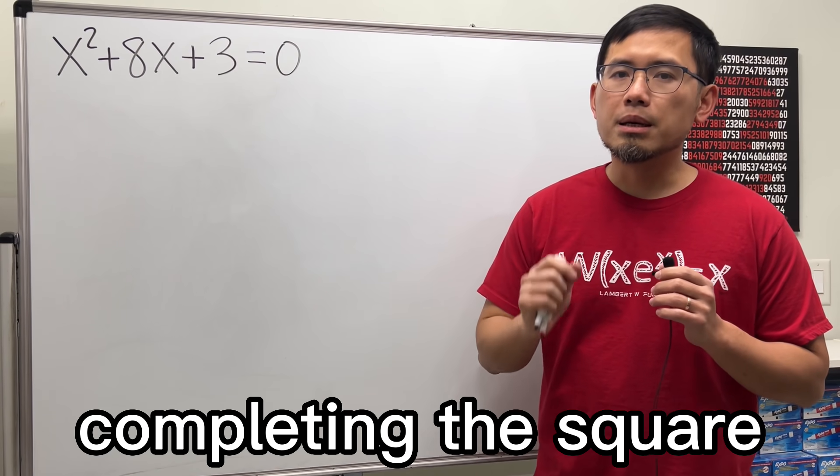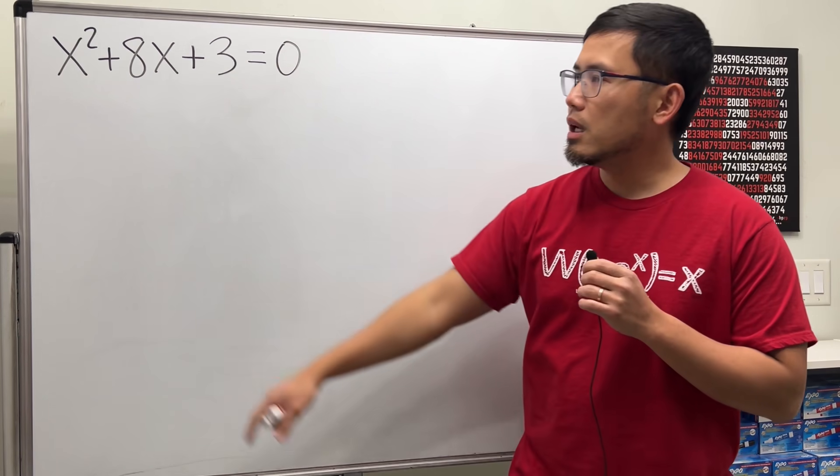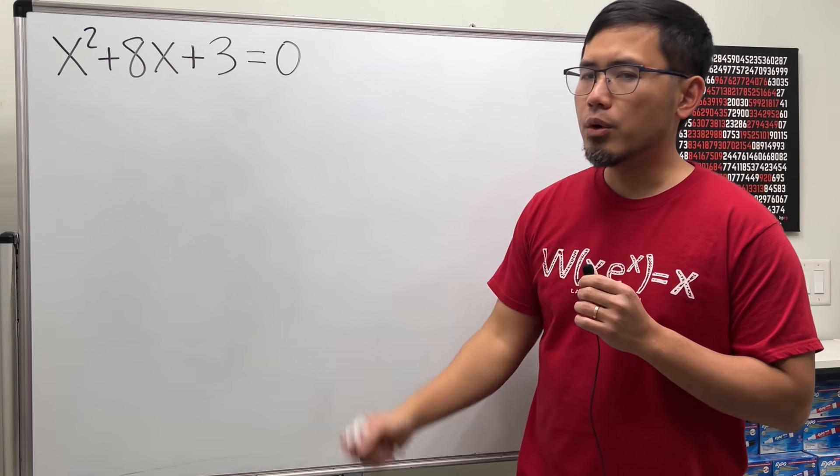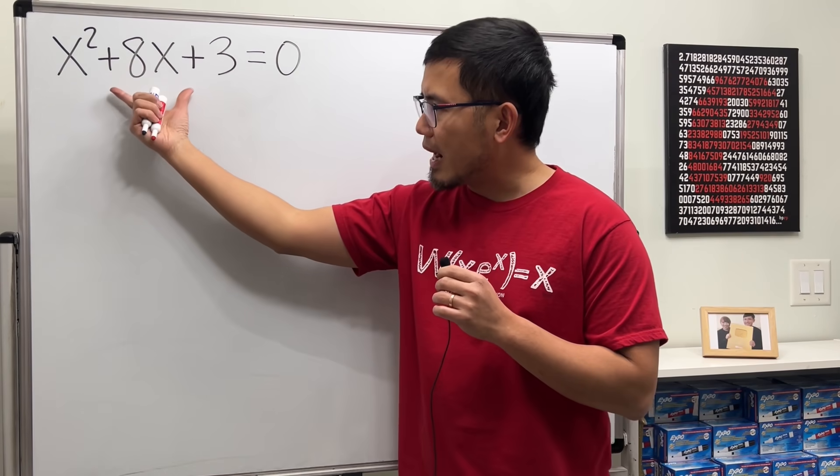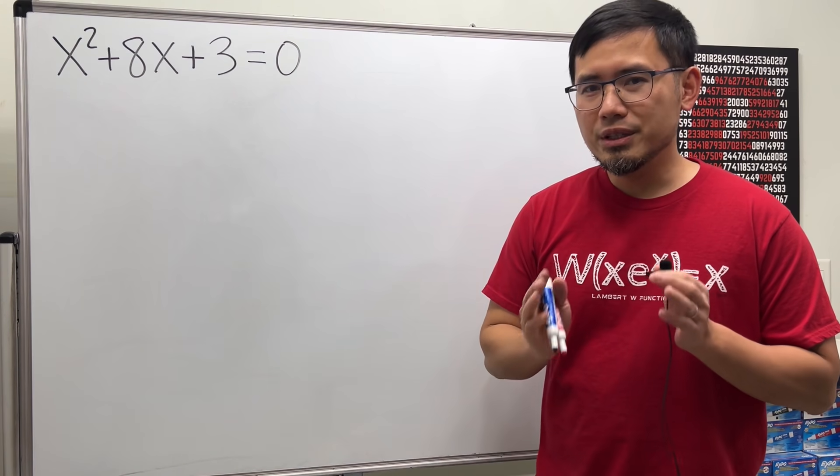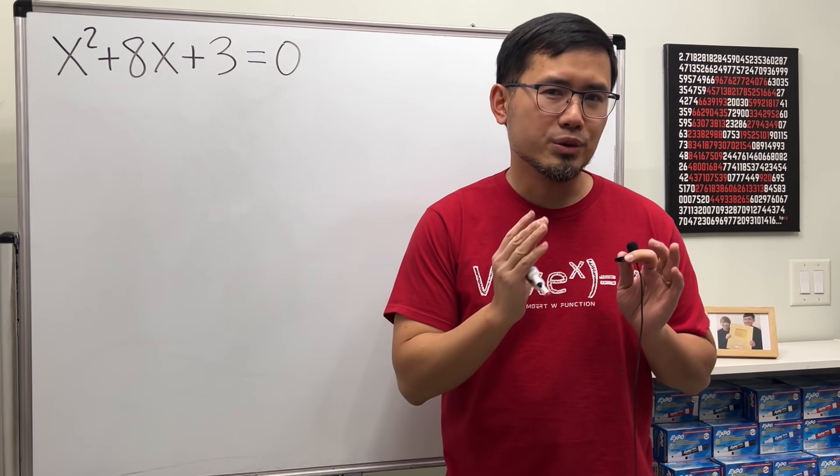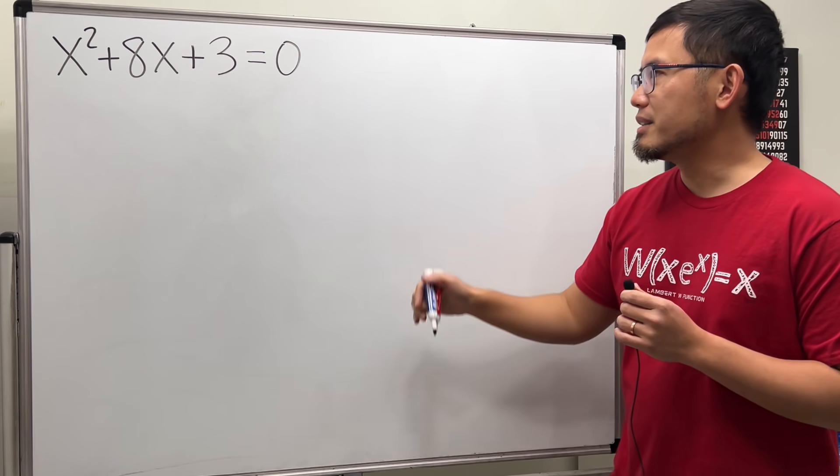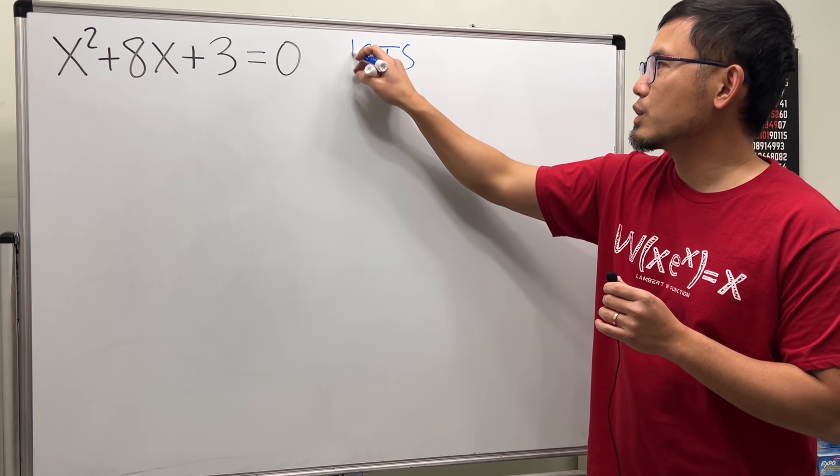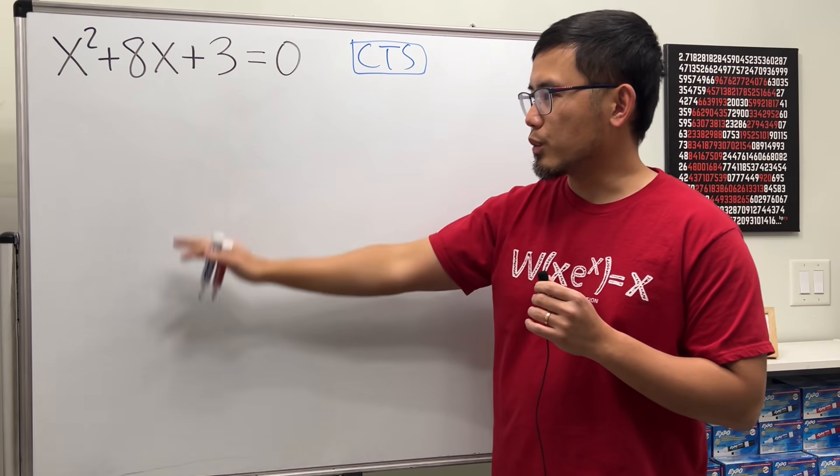Today I will help you understand what completing the square is when we are trying to solve a quadratic equation. So let's take this for example, and usually we'll try to factor this, but let me tell you this is not factorable. So either we solve this by completing a square method or use the quadratic formula, but today it's all about completing the square. I'm going to write down the steps for you guys and work out the question along the way, but I will also give you the geometric meaning behind completing a square.